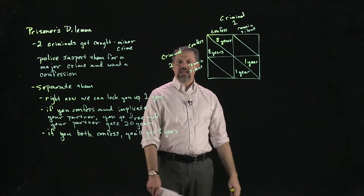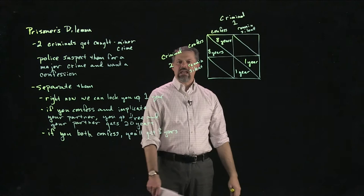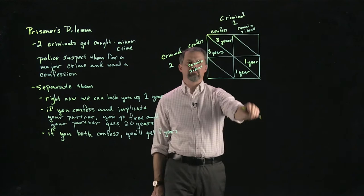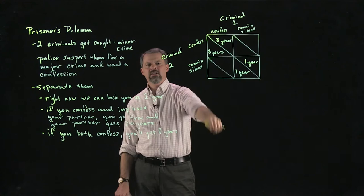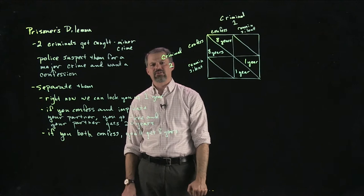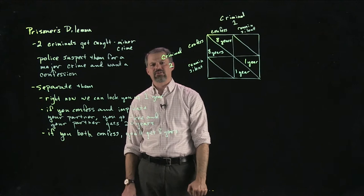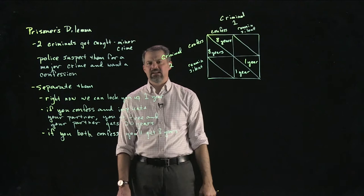The best outcome for the team is both remain silent, each getting one year. If that were the full extent of the game, they'd both remain silent — we all know the unwritten code is to deny everything and stick to your story. If they confess they get eight years, if they remain silent they get one year. But it's the off-diagonal elements — the asymmetric cells — that create the fly in the ointment.